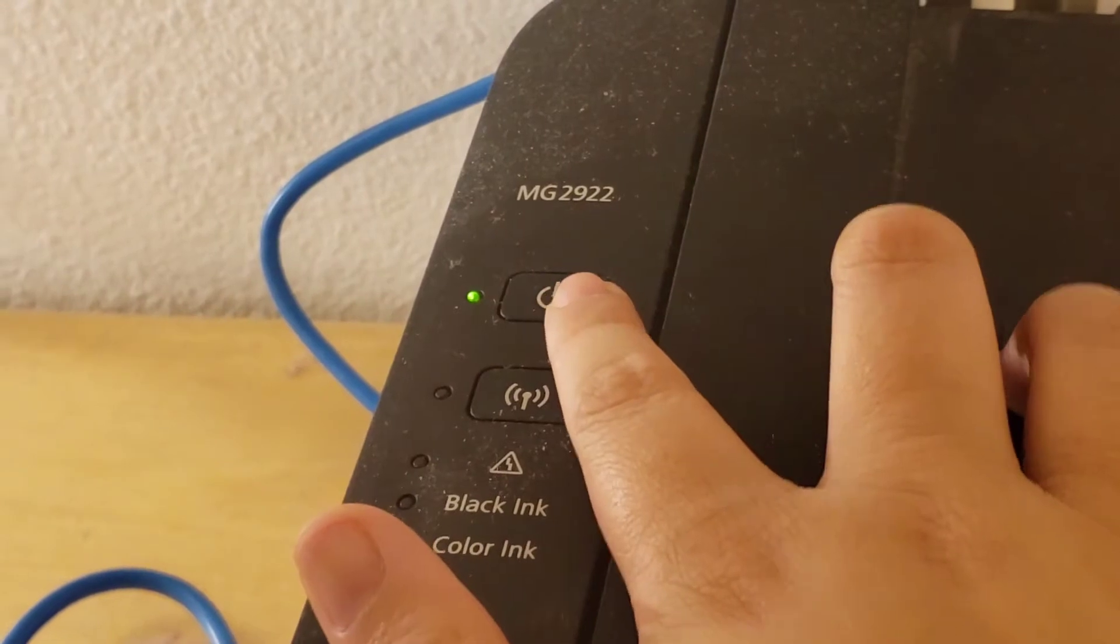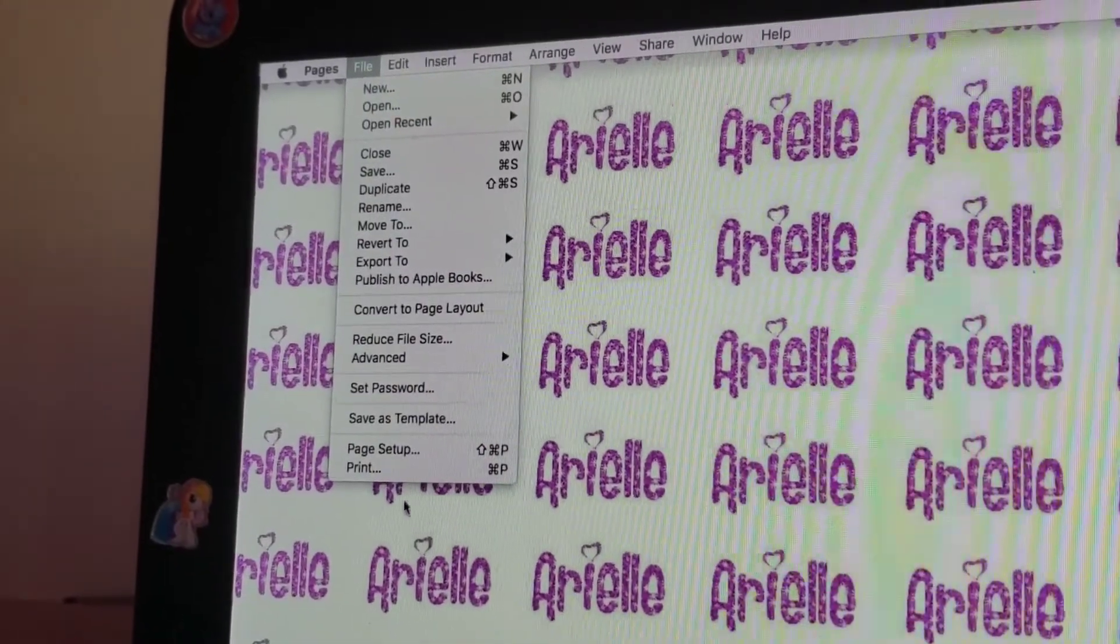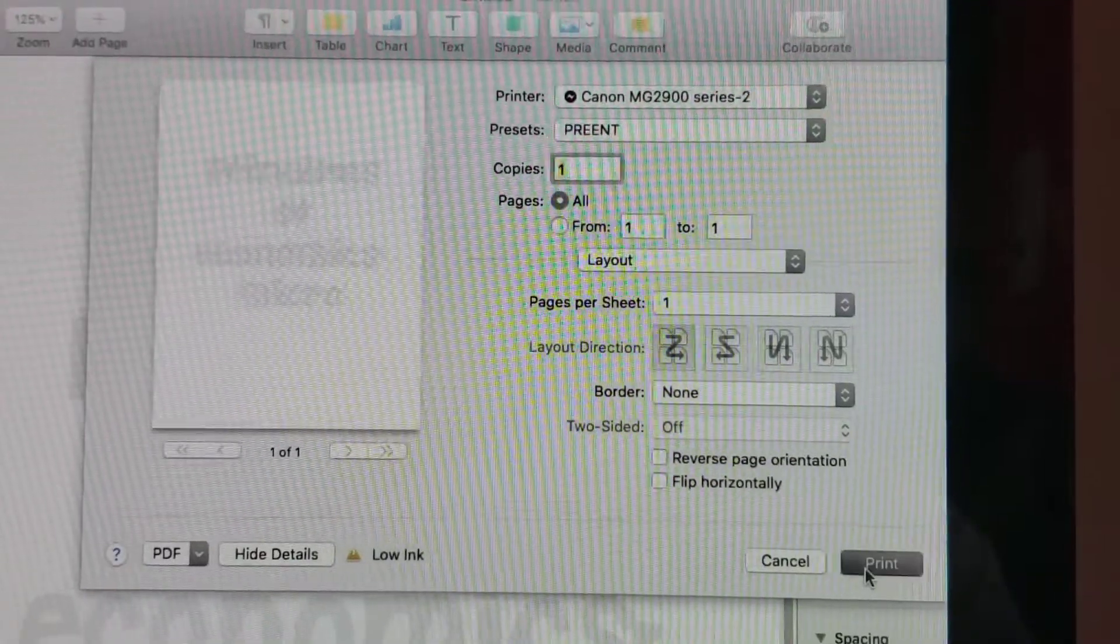Once I'm ready, I will turn on the printer, click on the file section, and then I'll click print, and then my titles will print out.